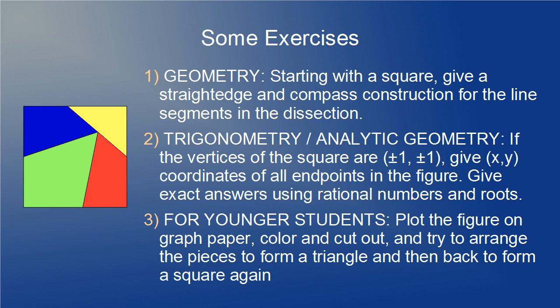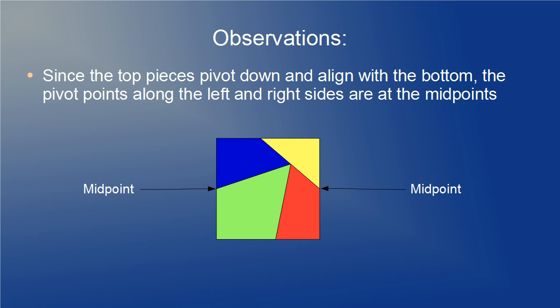So, let's get down to business. I'm going to start on these problems with some observations first, and these observations are from watching the second animation. Observation number 1: Since the top pieces pivot down and align with the bottom, the pivot points along the left and right sides of the square are at the midpoints. That's an easy way to start off the answers with two points whose coordinates are easy to determine and describe.